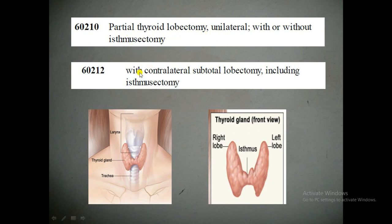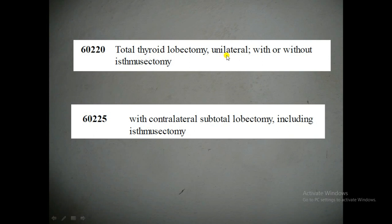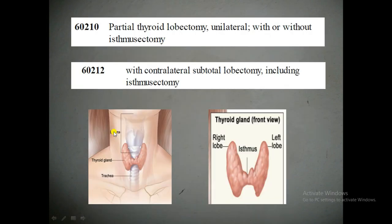The next CPT code is 60212 — partial thyroid lobectomy unilateral with contralateral subtotal lobectomy including isthmectomy. Note that the 'with or without isthmectomy' applies only to 60210. For 60212, the physician also performs a subtotal lobectomy including isthmectomy on the opposite side. Similarly, total thyroid lobectomy unilateral is CPT 60220, and with contralateral subtotal lobectomy it is CPT 60225.